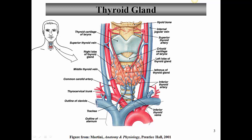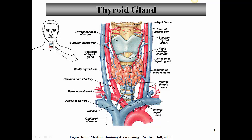As far as arterial supply, there is a superior thyroid vein, a middle thyroid vein, and inferior thyroid veins that drain the thyroid gland. In about 10 to 15 percent of the population, there's an additional artery known as the thyroid ima artery that feeds the thyroid. This could be dangerous if somebody tries to make an incision in the trachea to establish a tracheotomy or tracheostomy.